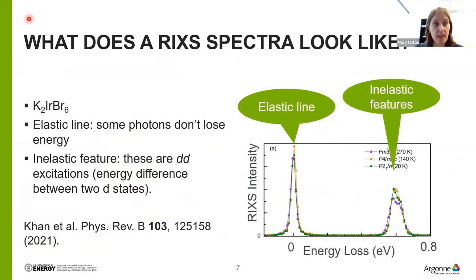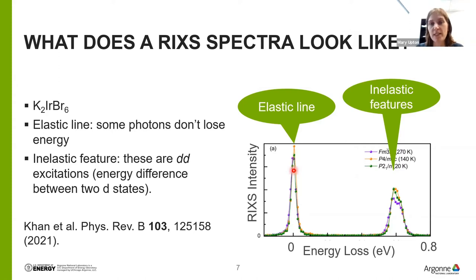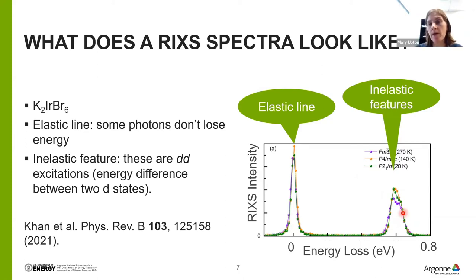This is a typical RICS spectrum — a fairly recent measurement of an iridate. Here you can see the elastic line; many of the photons don't lose any energy, which sets the zero for energy loss. Out at about 0.7 eV, you can see an excitation — in this case a DD excitation, which is the energy difference between an unoccupied and occupied D state.